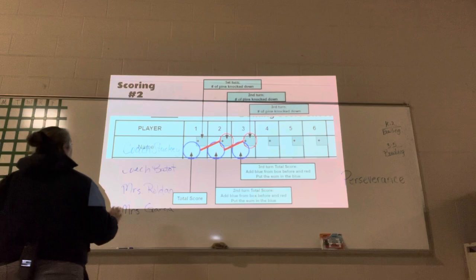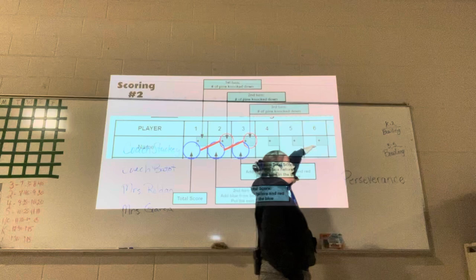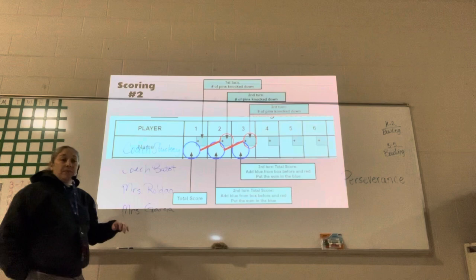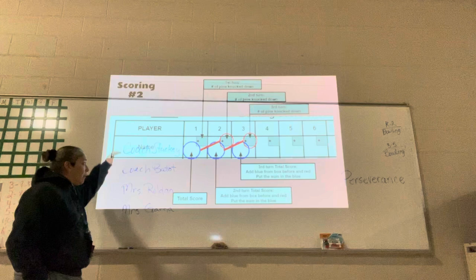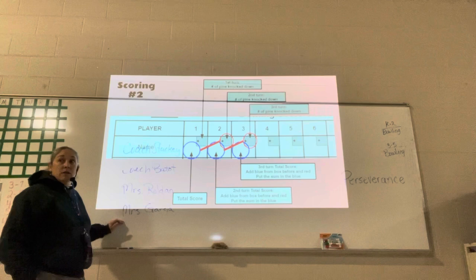All right, so let's talk about how we're going to score. On your scorecard, there is going to be a line for each person in your group, on your team. If there's four of you, then all four spots get taken up. Does that make sense?